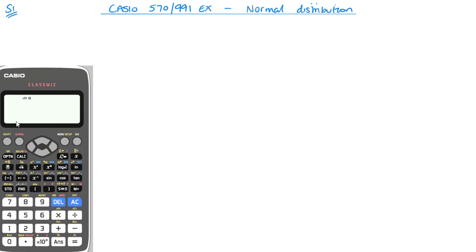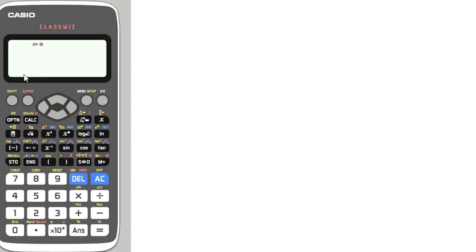So let's get into it. To do the normal distribution in your calculator, you need the Casio ClassWiz 570 or 991 EX, the English version. To get into the menu, just go into Menu, and then we need to go across and down to Distribution, which is number 7. We can hit Equals here, or we could have just clicked number 7 from the beginning.